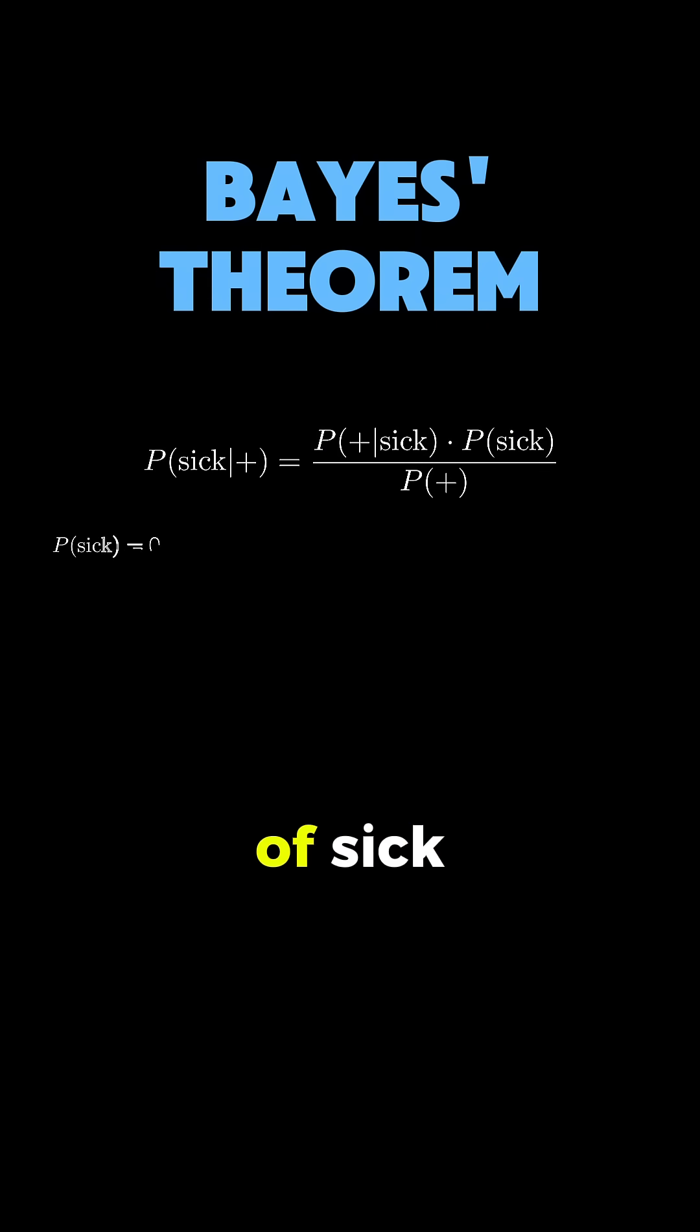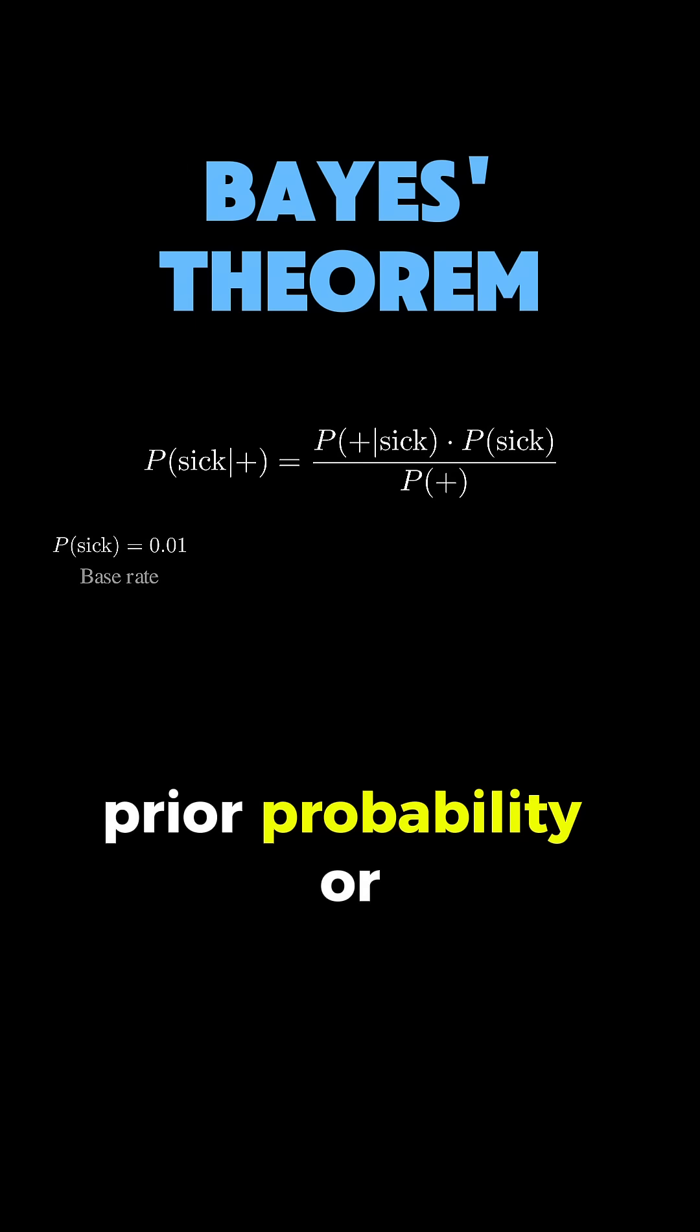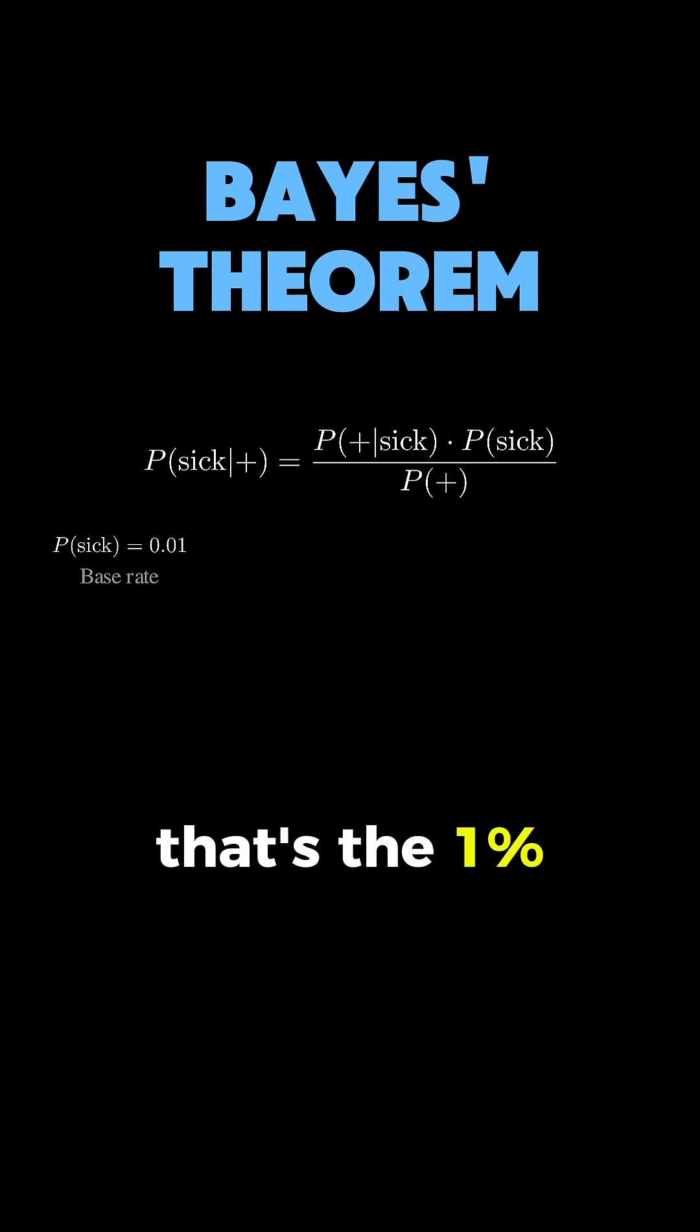First, we have P(sick), which is our prior probability or base rate—that's the 1% or 0.01 we started with. This is what we knew before any testing, just the general rate of the disease in the population.